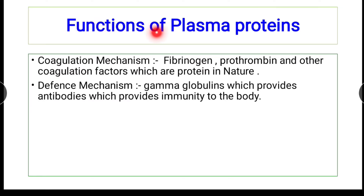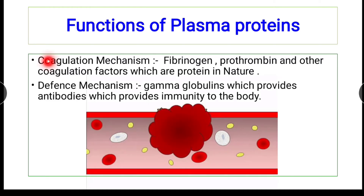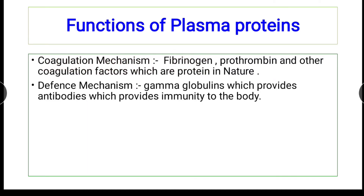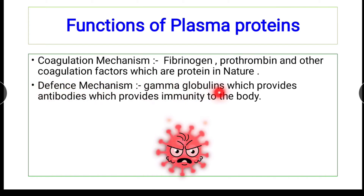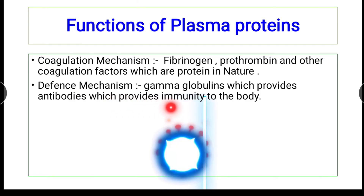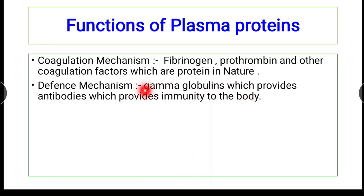Functions of plasma proteins: plasma proteins are involved in the coagulation mechanism — fibrinogen, prothrombin, and other coagulation factors are protein in nature. They are also involved in the defensive mechanism, as gamma globulins provide antibodies, which in turn provide immunity to the body.